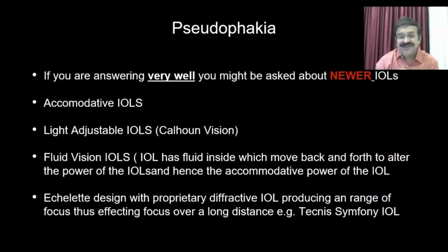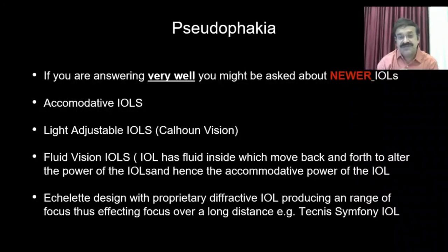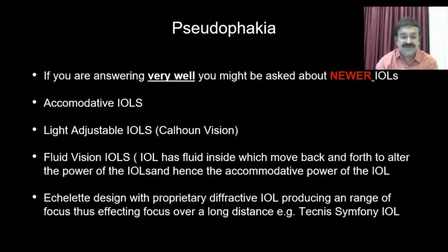If you are answering very well, you may be asked about newer IOLs with novel mechanisms. These include accommodative IOLs, which bring about accommodation through their haptic design; light-adjustable IOLs made by Calhoun Vision; and fluid vision IOLs, which have fluid inside that moves between chambers, mimicking the change of shape of the crystalline lens to bring about accommodation. Another type is the extended depth-of-focus (EDOF) design with proprietary diffractive technology, which causes an elongated focal distance for sharp focus over a long range of vision — such as the Tecnis Symfony by Abbott Vision.